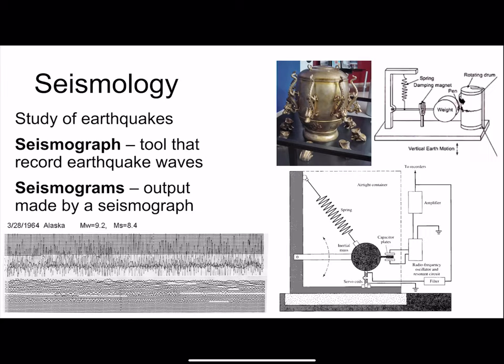Scientists who study earthquakes are called seismologists. The ancestor of the modern earthquake detector was invented in China by an inventor named Zhang Heng in the second century. This apparatus could measure which direction an earthquake came from when metal balls dropped from the mouths of dragons into frogs. The early seismograph — the tool used to measure earthquakes — was invented in the early 1900s. A heavy weight was attached to a pen which drew lines on a rotating drum attached to the base of the mechanism.